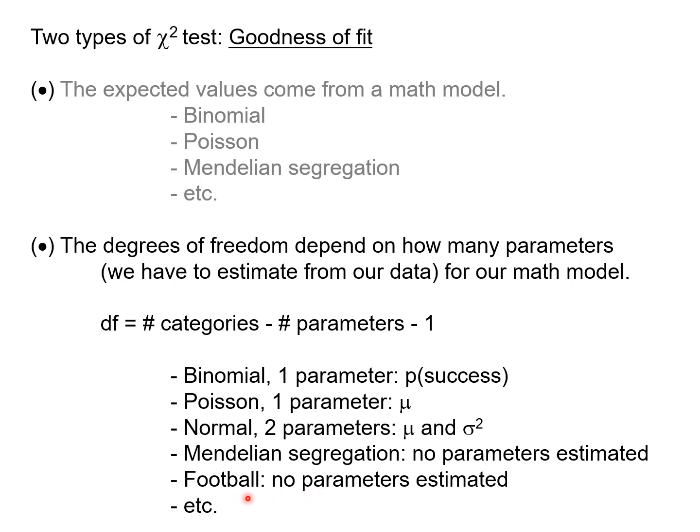Similarly, for the football example there were no parameters estimated because we knew the probability of success — winning a game — was 50%. In the insect example, we did have to estimate one parameter: we used the data to estimate the probability of infection in order to make those calculations, so in that case we subtract one for the overall probability of infection.